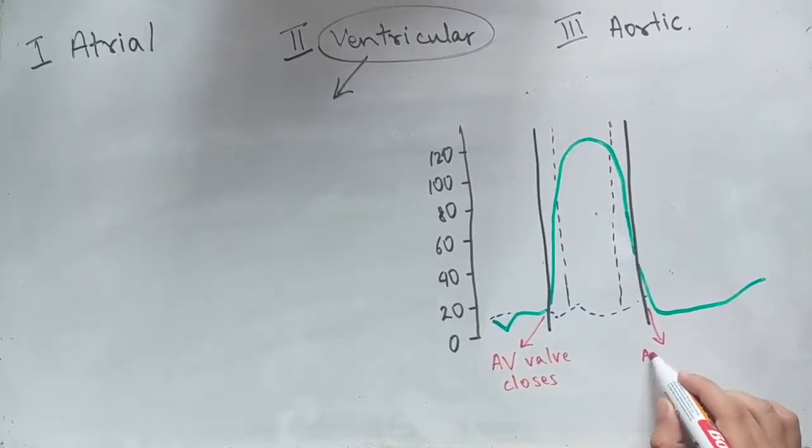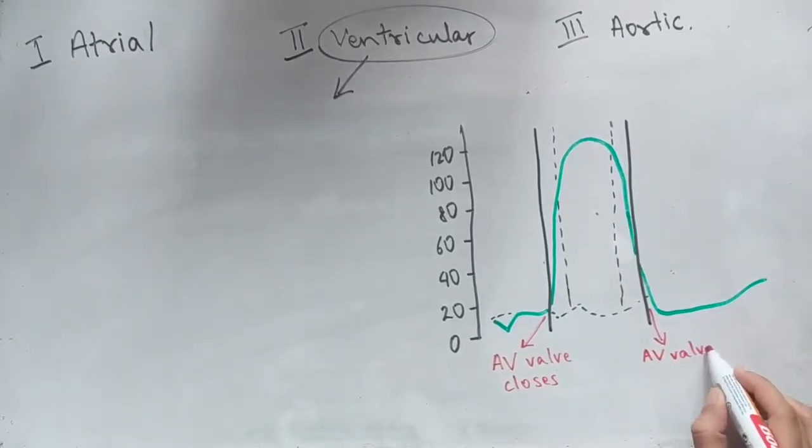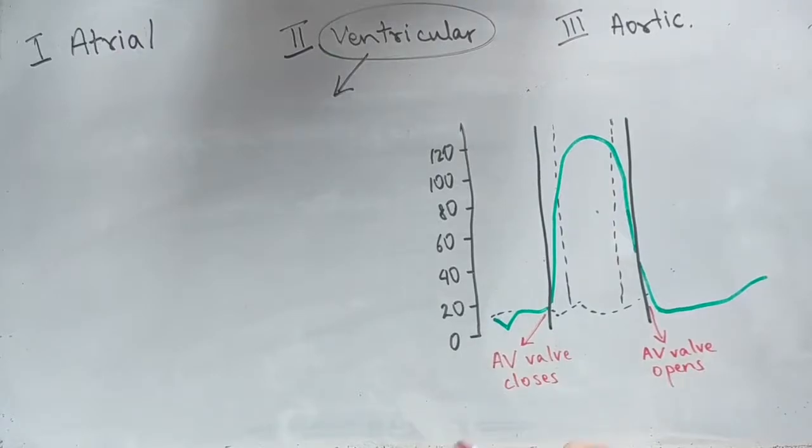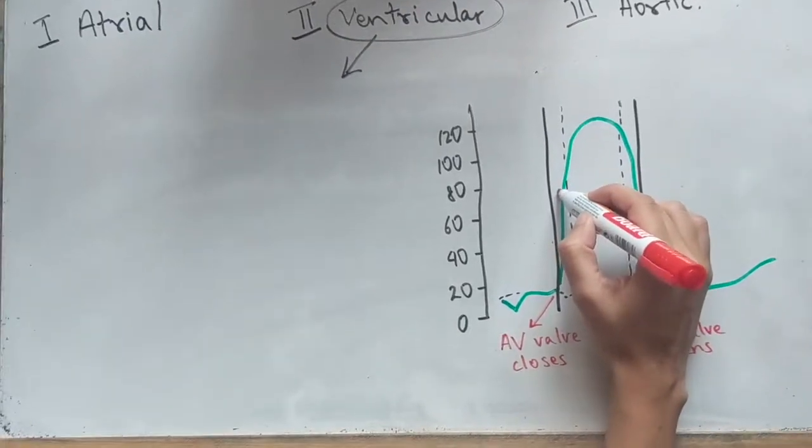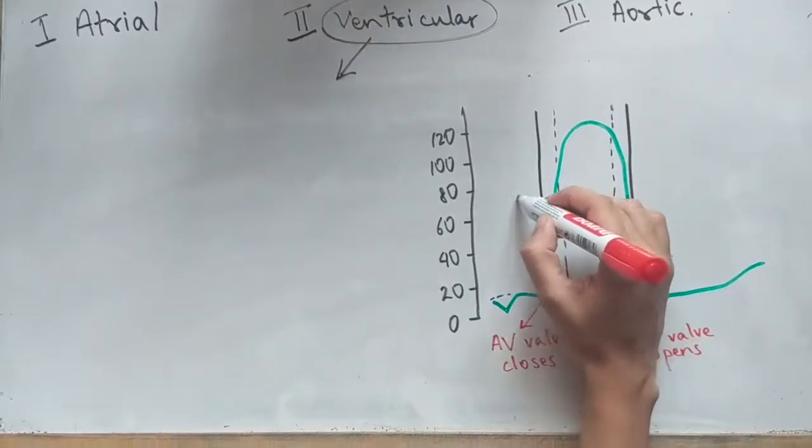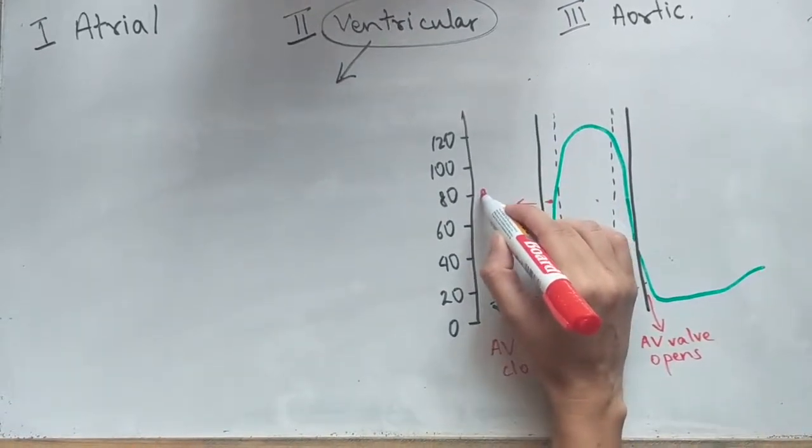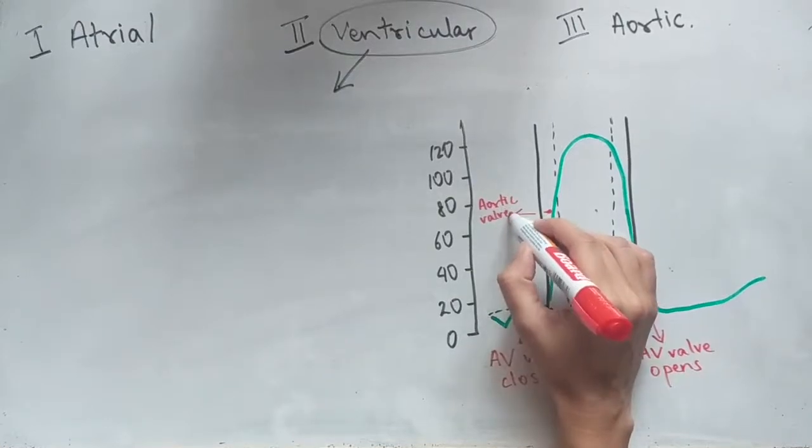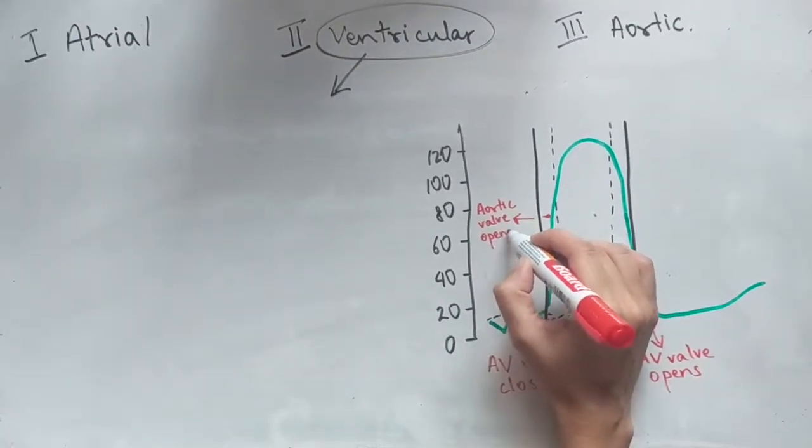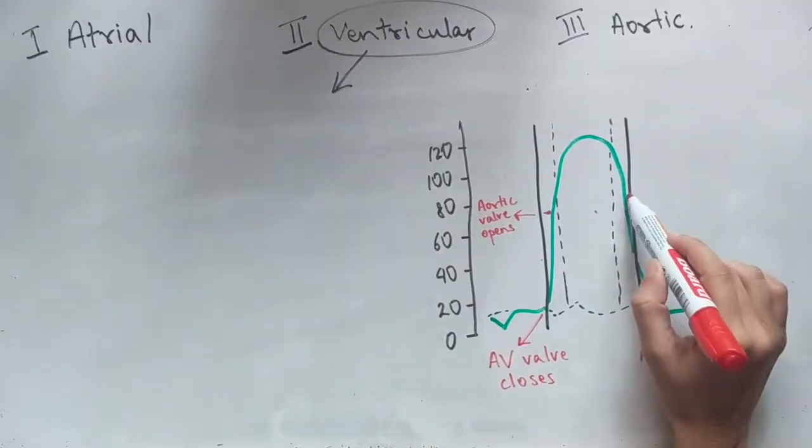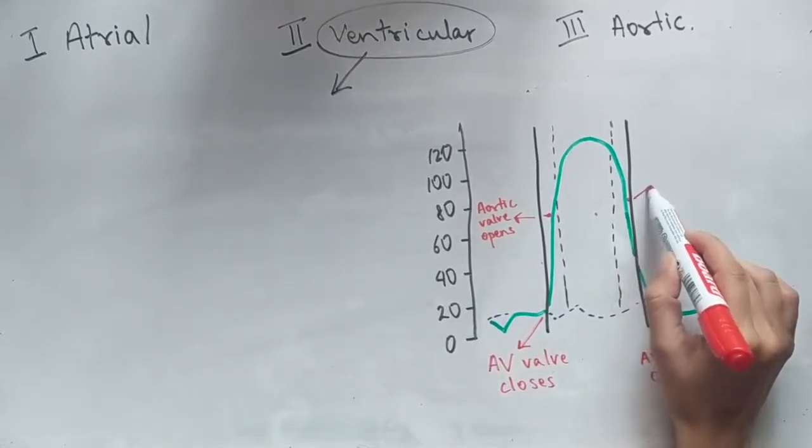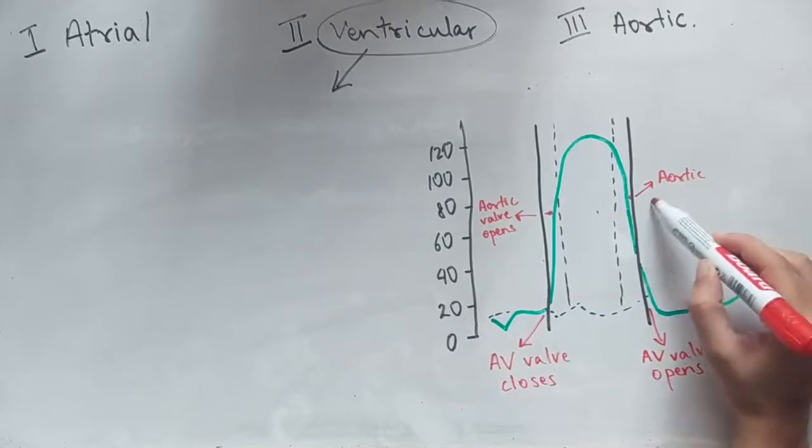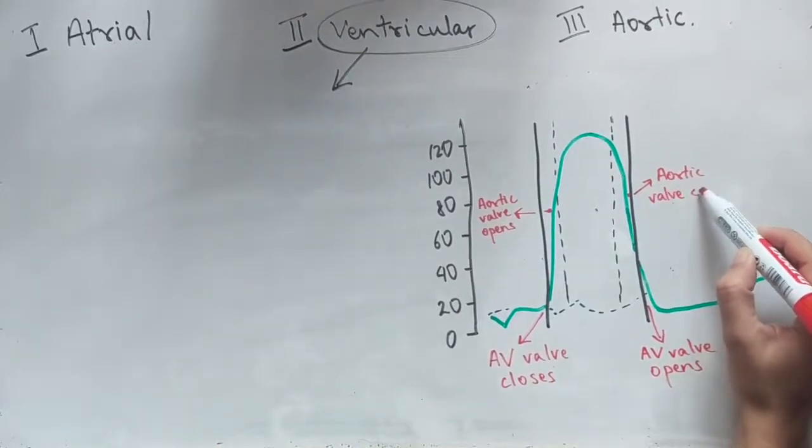So on the top we've got first the aortic valve which is closed. It opens first because the atrioventricular valve closes and then you've got the closing of the atrioventricular valve, the closing of the aortic valve which causes the atrioventricular valve to open.